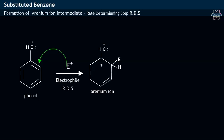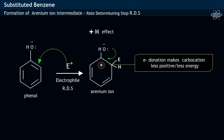In this arinium ion, it may be noticed that the carbocation with positive charge on carbon is attached to an activating group such as a hydroxyl group. The hydroxyl group, with a lone electron pair on oxygen, acts as a +M group and thus donates the electron pair to the carbocation, thereby making it less positive and less energetic.